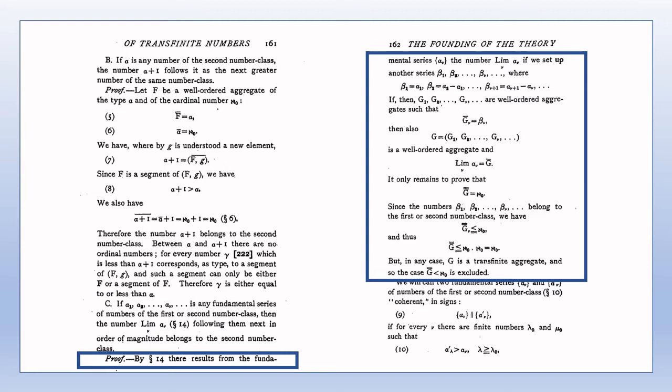The proof that the cardinal number of the aggregate g is aleph naught — and thus the ordinal number of g, and hence the limit of the fundamental series, is a number of the second number class — uses point 8 from section 6, that aleph naught times aleph naught equals aleph naught. This is applicable here since each of the numbers beta nu has cardinal number less than or equal to aleph naught, and of course there are aleph naught terms in the sum beta 1 plus beta 2 plus, and so on.